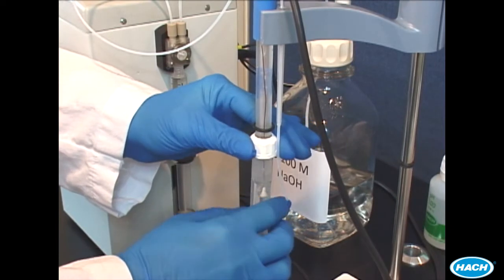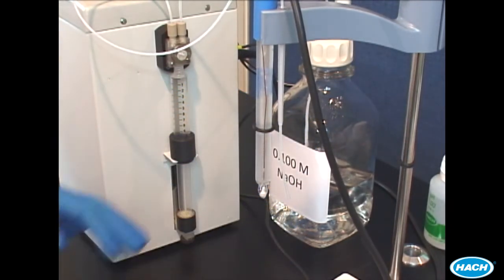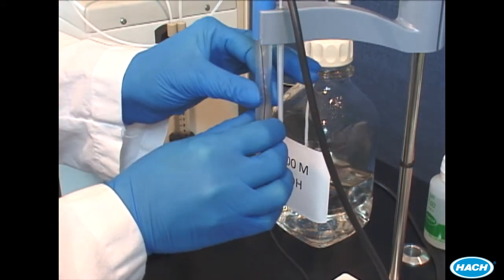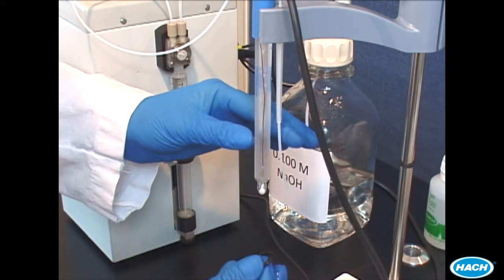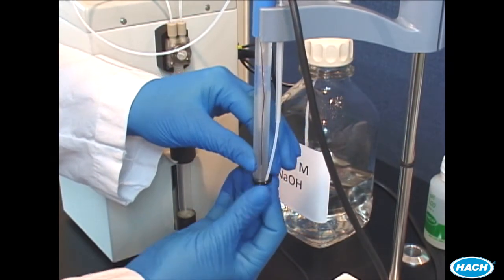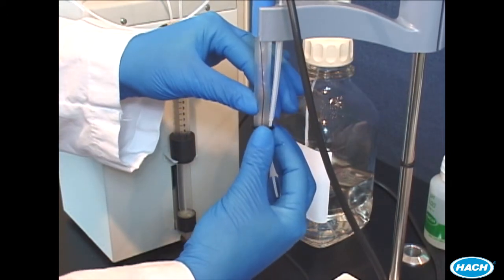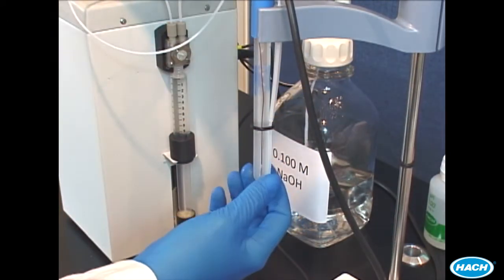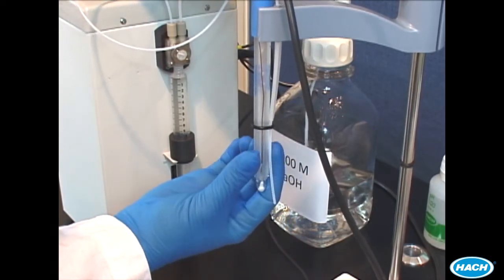Remove the pH electrode storage bottle. Secure the dispensing tube to the electrode with the included O-ring. The end of the dispensing tip should terminate just above the end of the pH electrode.